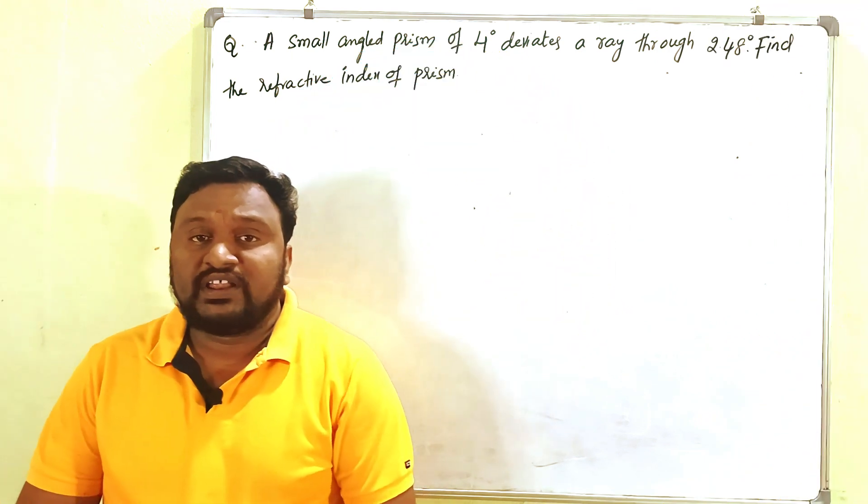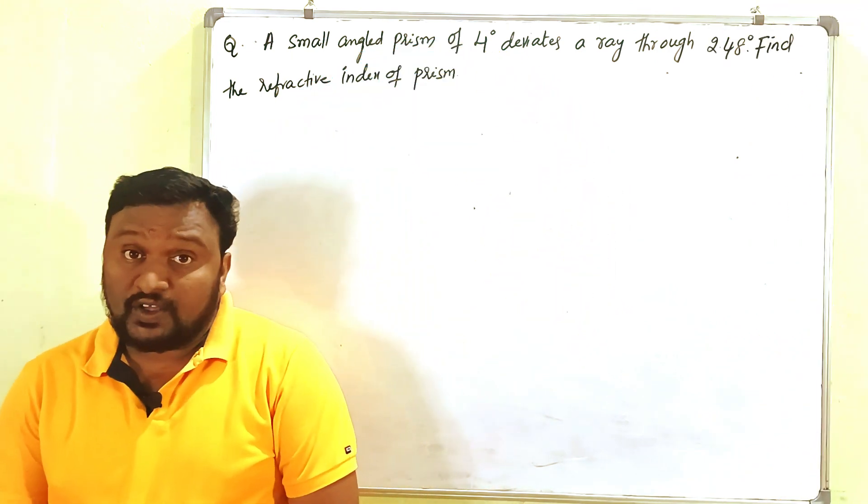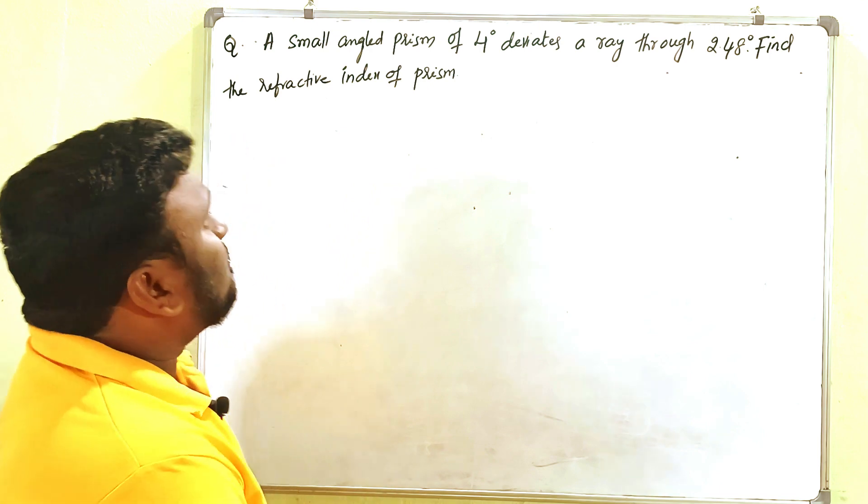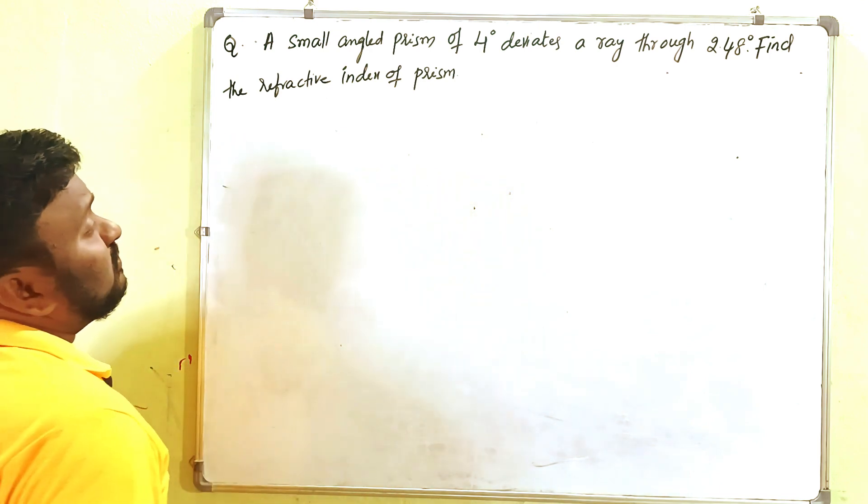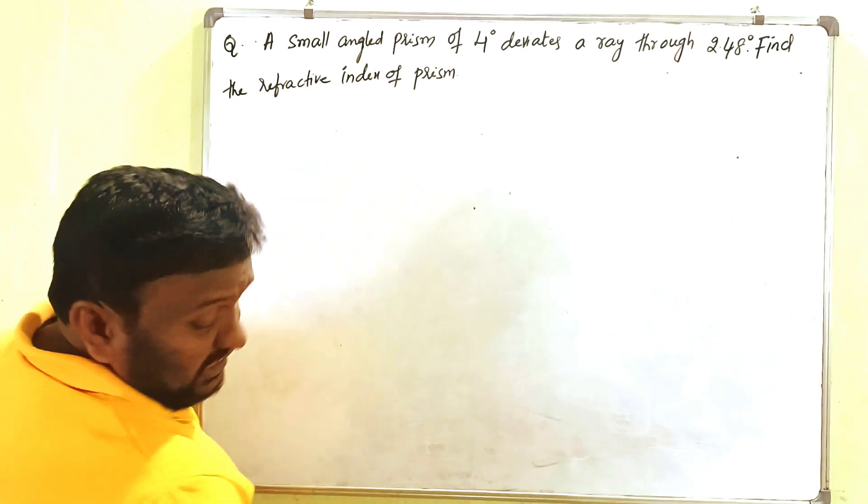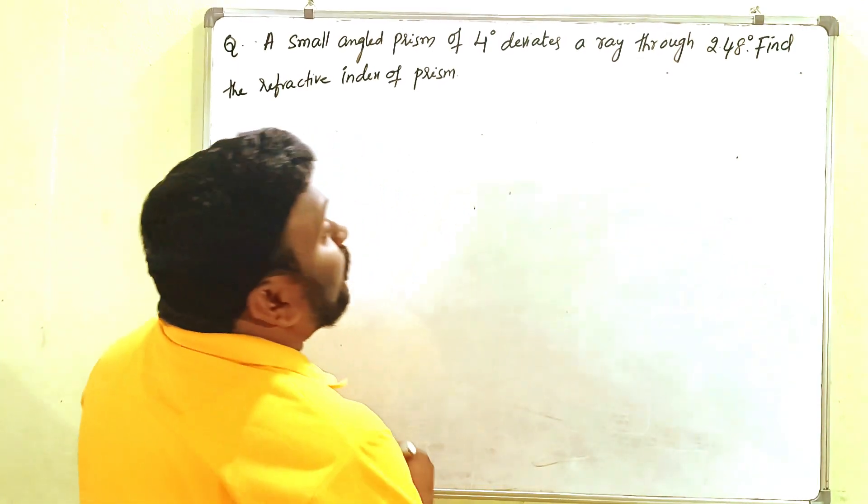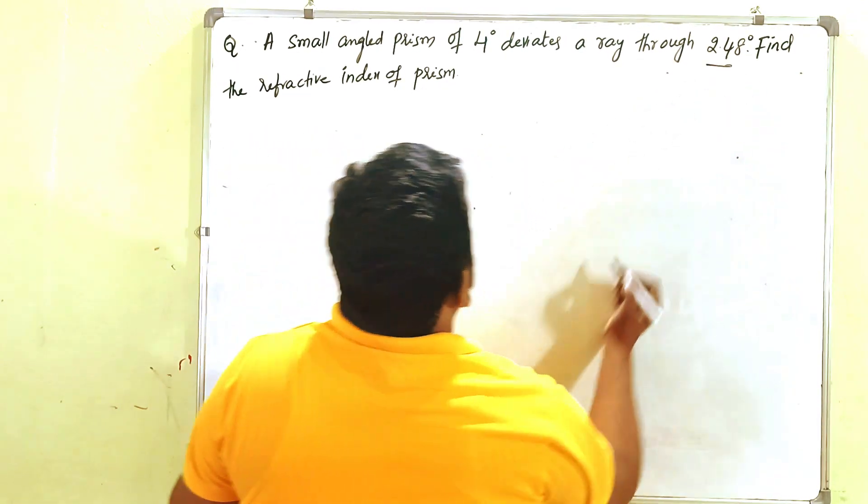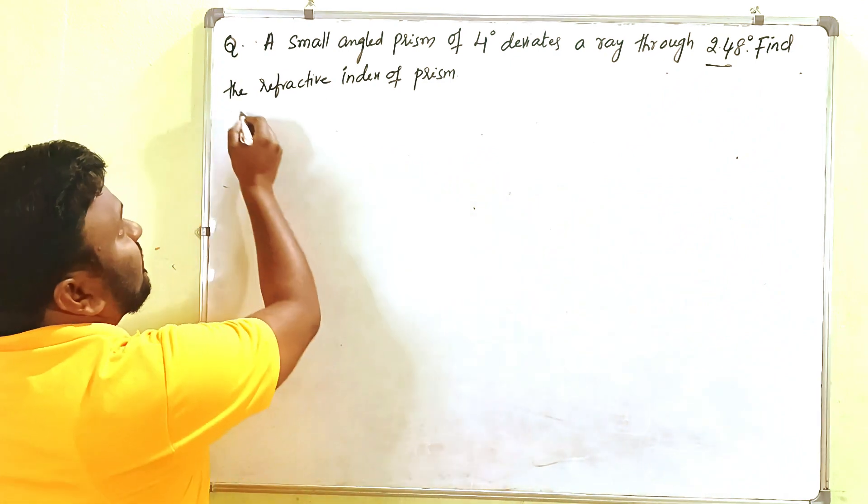This is a very important but short question in the chapter of ray optics. A small angle prism of 4 degrees deviates a ray through 2.48 degrees. Find the refractive index of the prism.